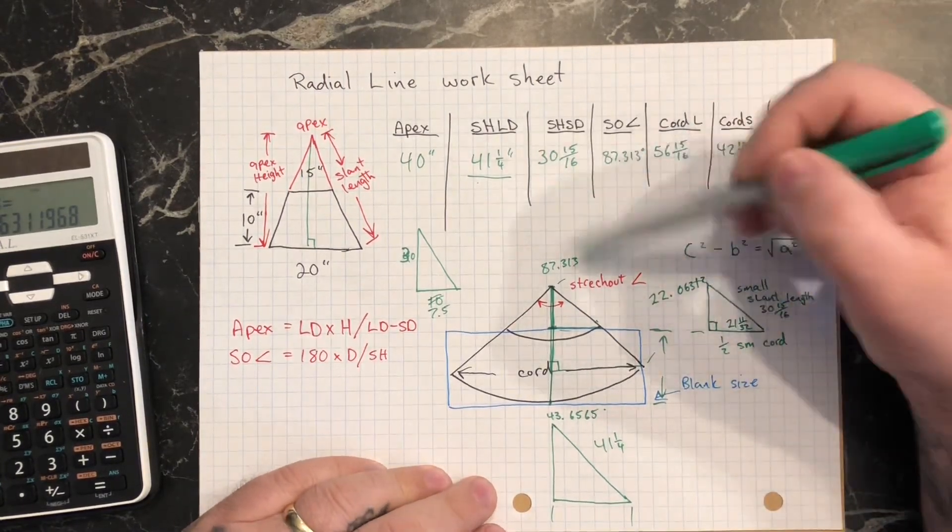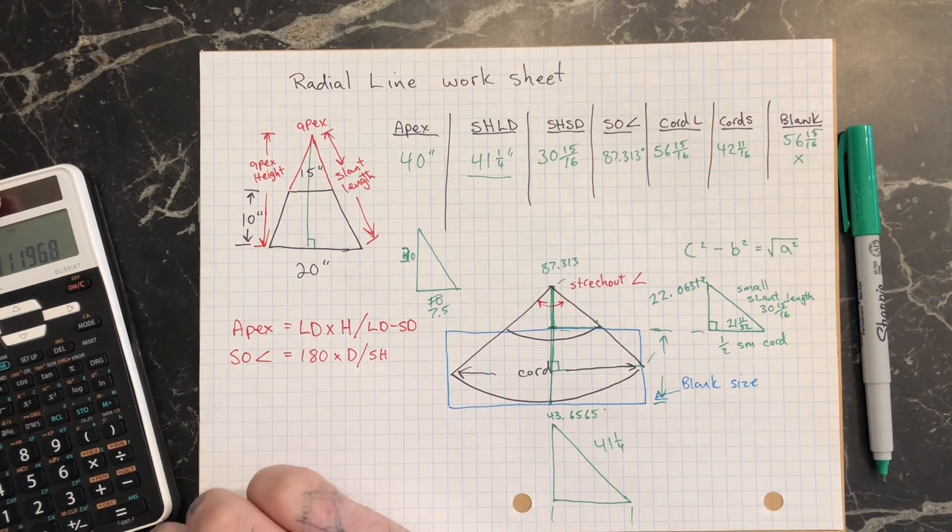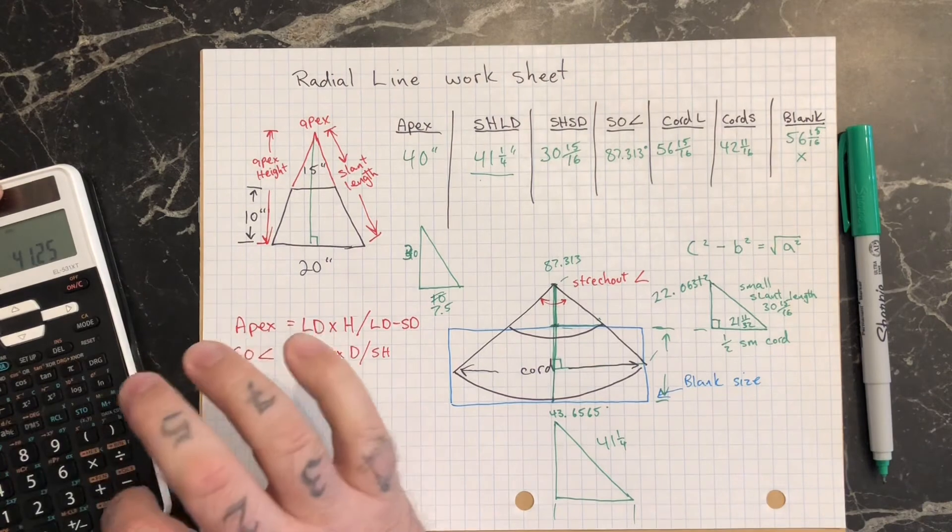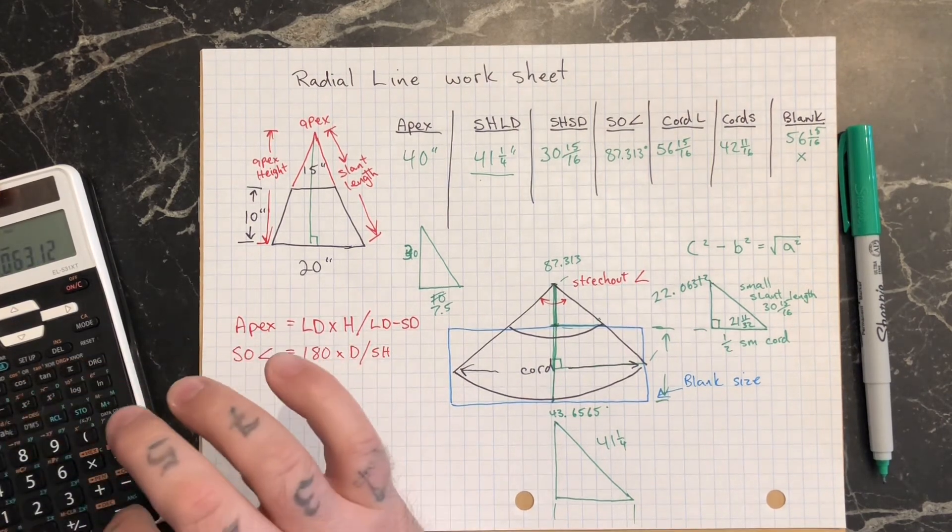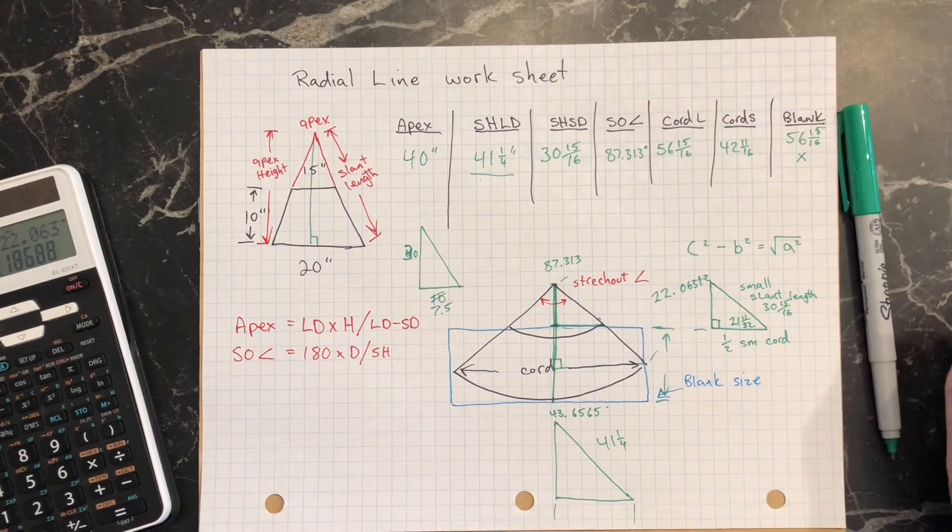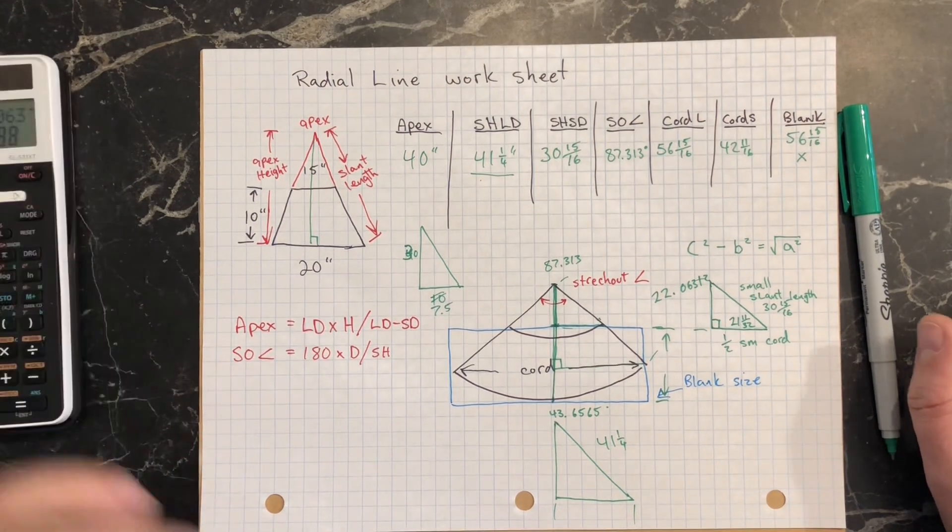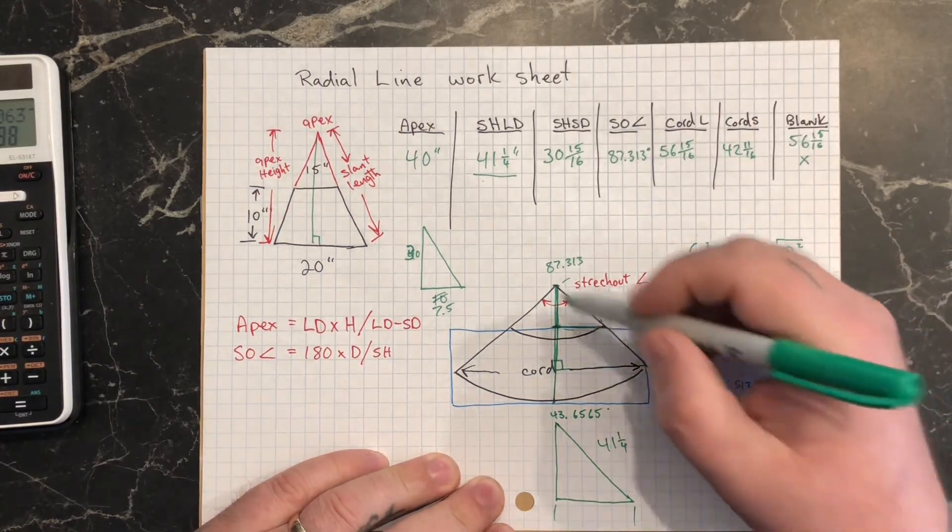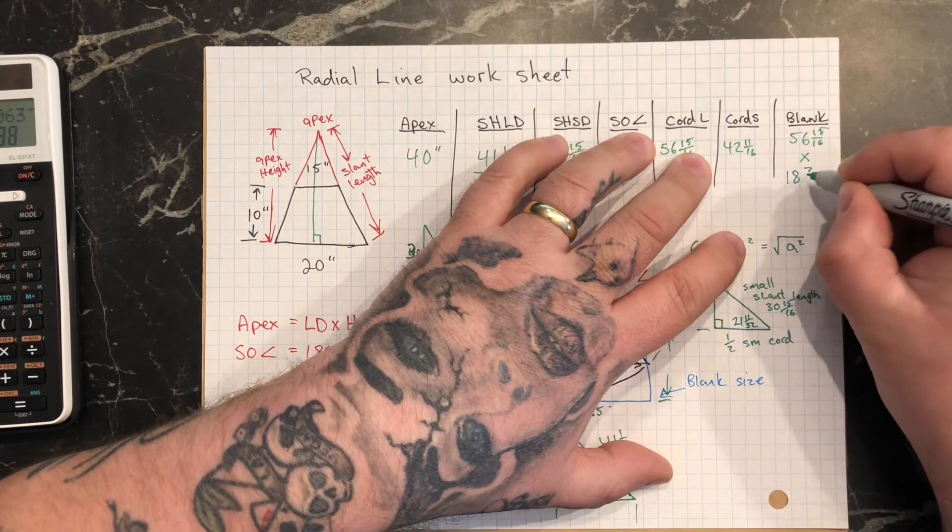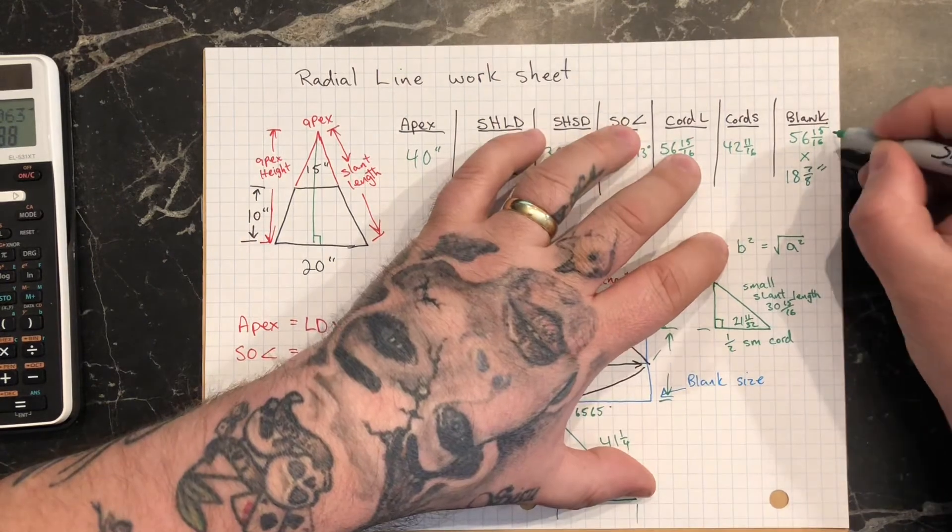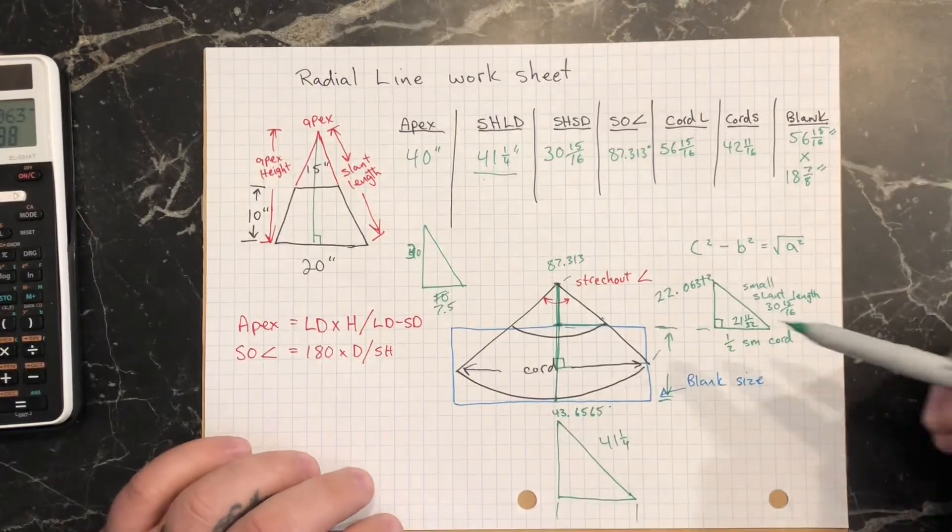And then I can just subtract that off of my large slant length. And my large slant length was 41 and a quarter. So 41.5 minus 22.06312. Wait a sec. I think I did something a little bit wrong there because my answer doesn't quite match. Anyway, I must have entered something wrong in my calculator. That is the way to do it. So give it a try yourself and you should come up with 18 and seven eighths. I must have hit a wrong button there. So getting that length there, subtracting it off the major slant length, should give you the actual blank size.